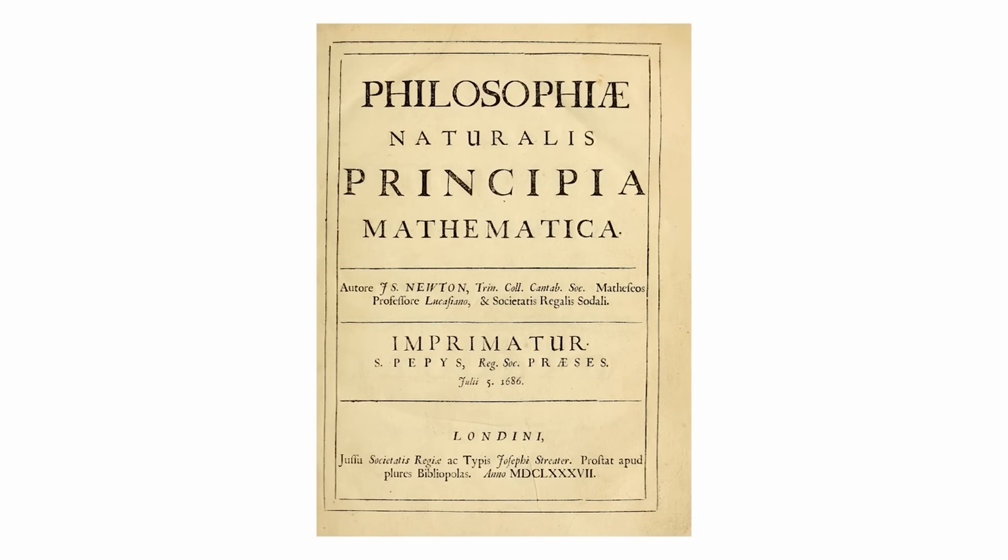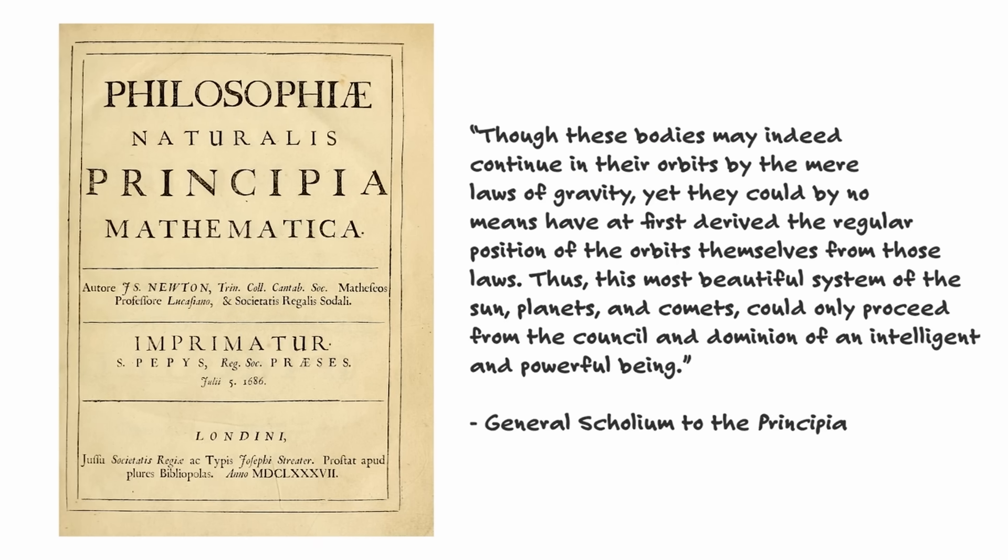Now it turns out that that's just historically false. And I was able to cite some passages from Newton at the hearing which showed that he built his ideas about intelligent design right into the very structure of his scientific work. In fact, in the General Scolium to the Principia, which is arguably one of the greatest works of physics ever written, Newton wrote the following. He was talking about the fine-tuning of the positioning of the planets in the solar system. This is what he said. He said, though these bodies may indeed continue in their orbits by the mere laws of gravity, yet they could by no means have first derived the regular position of the orbits themselves from those laws.